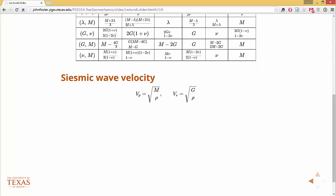The easiest way to measure the modulus are from seismic waves. We can show that the longitudinal seismic velocity is the square root of M over rho. Rho is the density of the rock. And the shear wave velocity is the square root of G over rho.